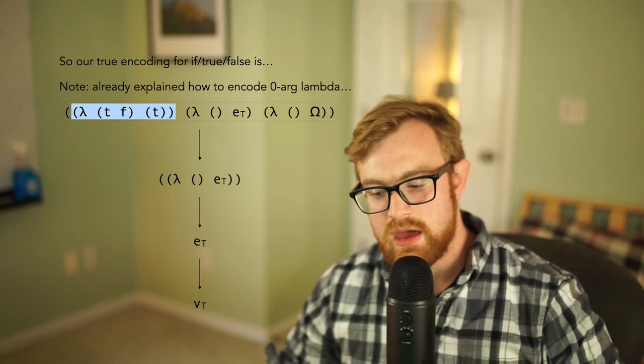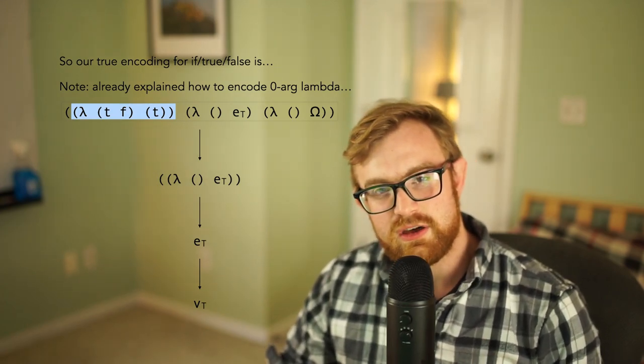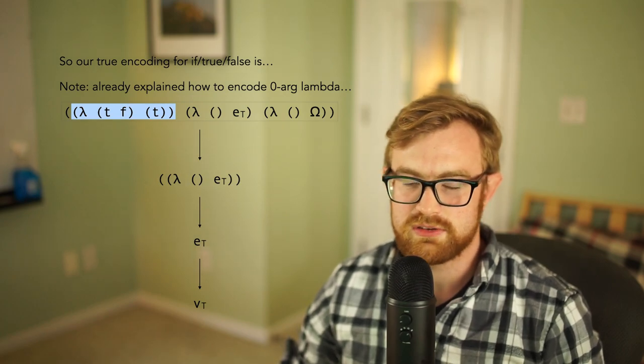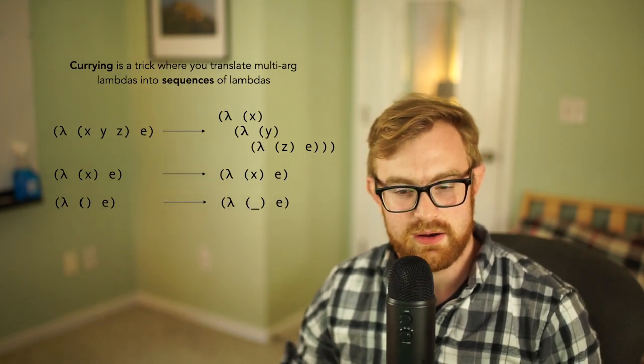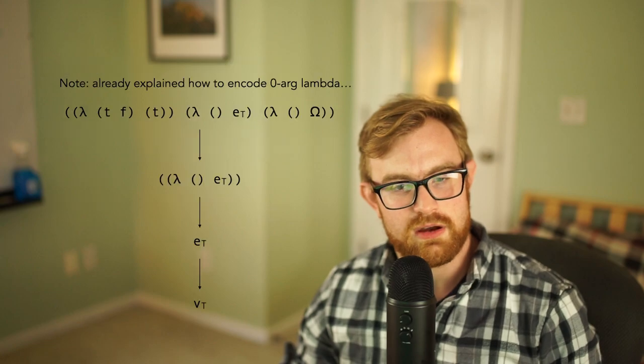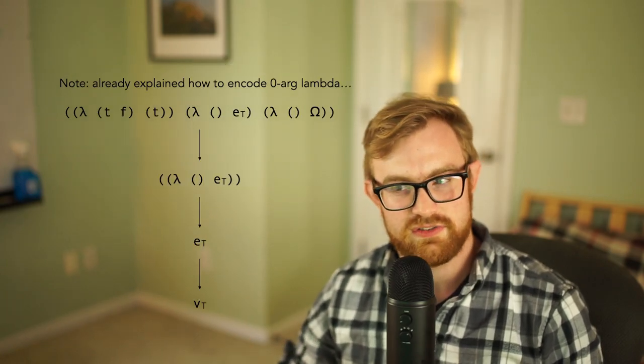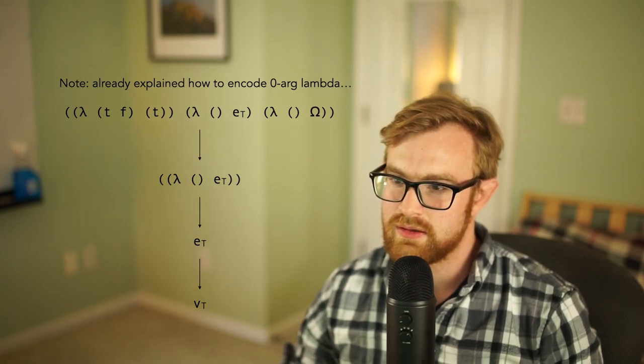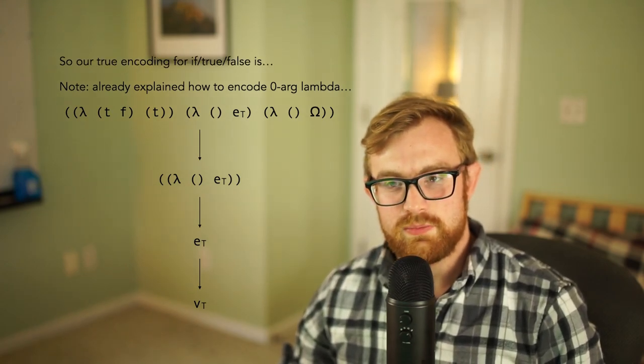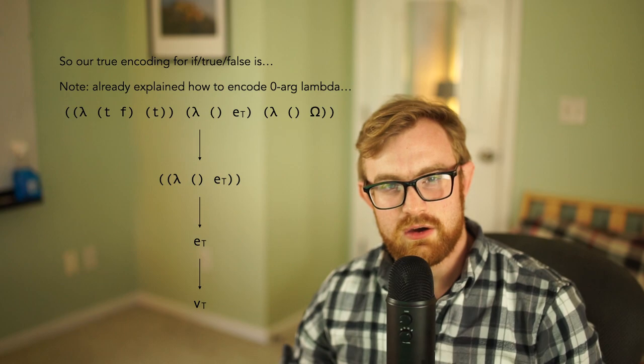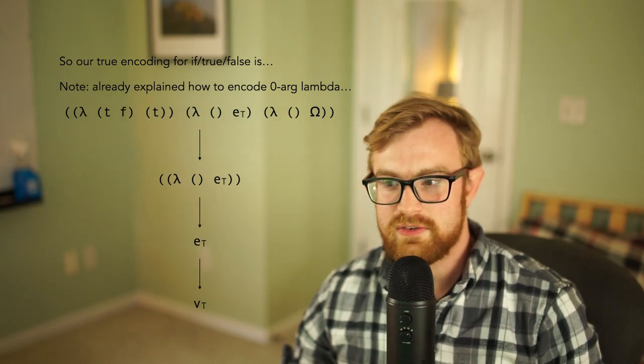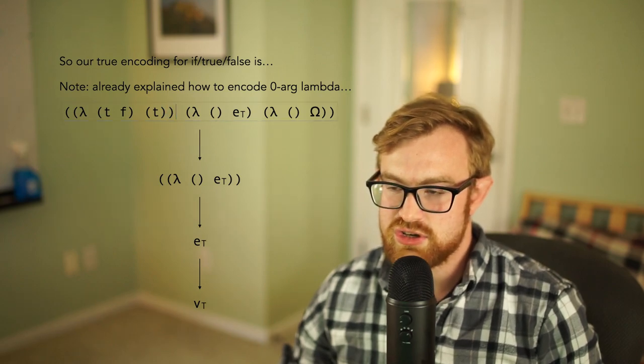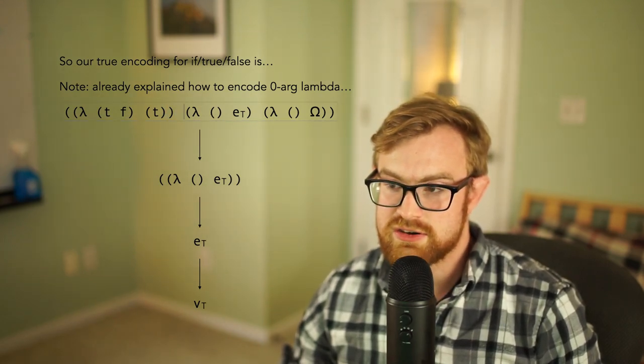And remember, I'm specifying those in terms of the previous transformation we had where we could have multi-argument lambdas. All right, so if you do that, you can even write your implementation to recursively call churchify and you'll get a really nice implementation like this. All right, so that's how you encode booleans and that's also how you encode ifs. So for ifs, what you do is you take the guard and you apply it to a true branch and false branch, but you wrap those both in a zero-argument lambda.